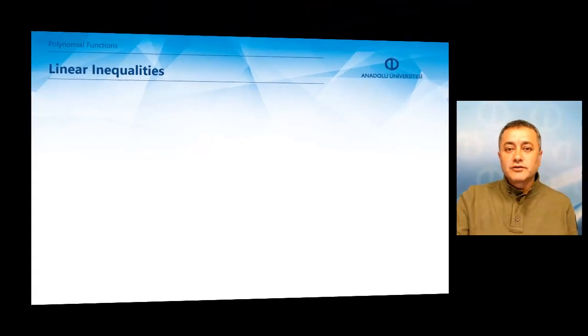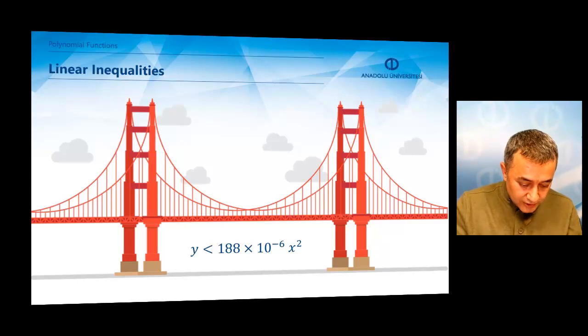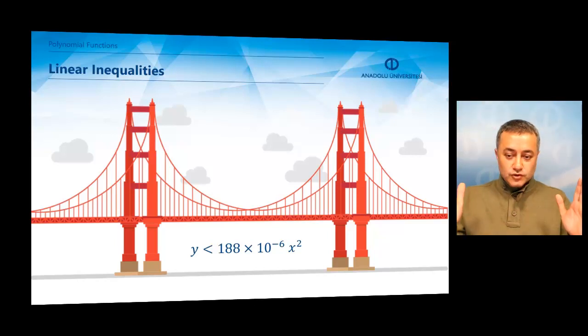We may talk about linear inequalities and how we may encounter these inequalities in our real life. There are many examples we may present. But the most interesting one is this bridge. Let me check the name of this bridge. I'm sorry. This is the Akashi bridge. And the ropes between the two legs of this bridge has a certain type of shape. It looks like a U, a very wide U. It's called a catenary, by the way.